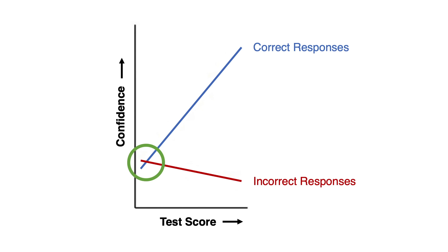The weakest performers, on the other hand, were no different in their confidence for the correct and incorrect responses, shown here in the green circle. And so, they showed poor metacognitive insight.